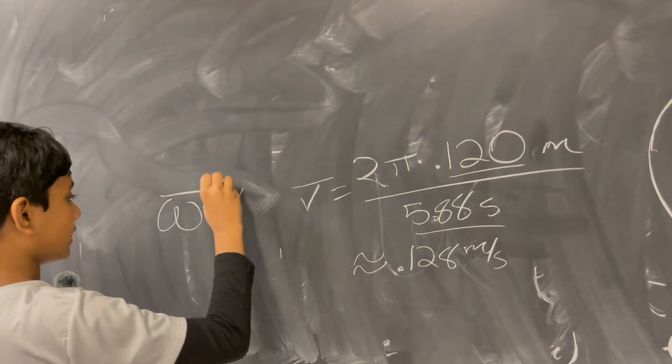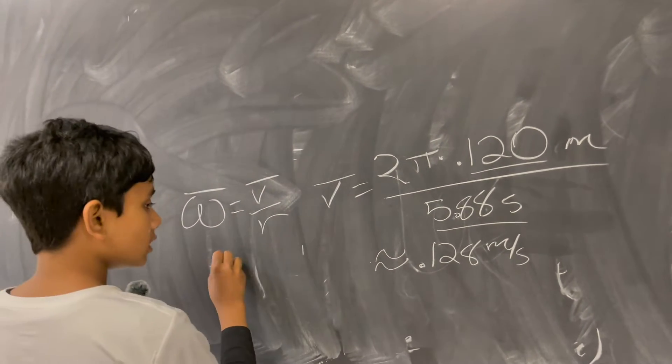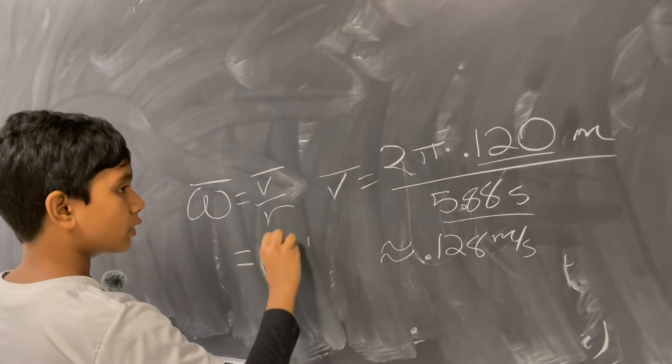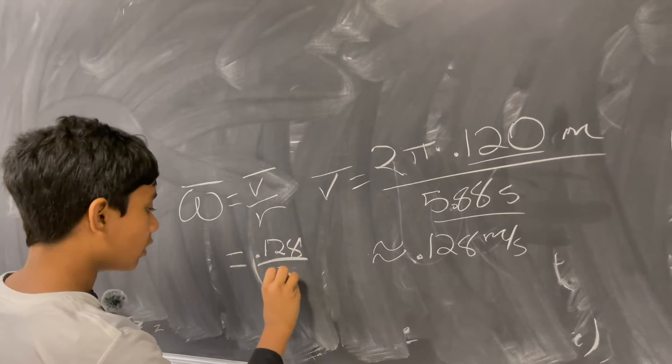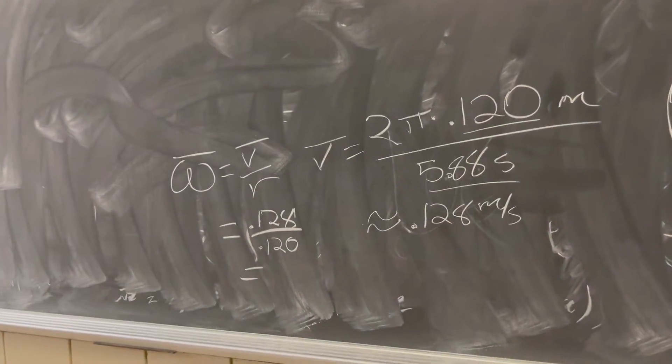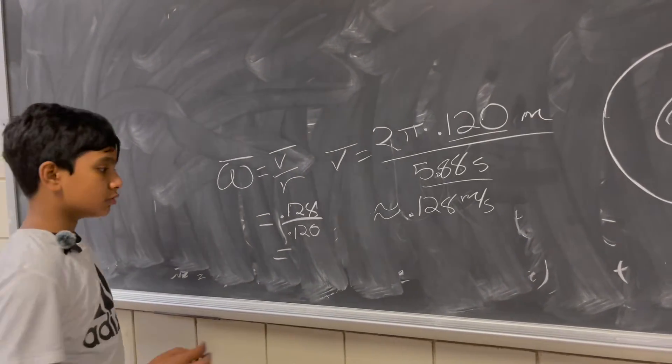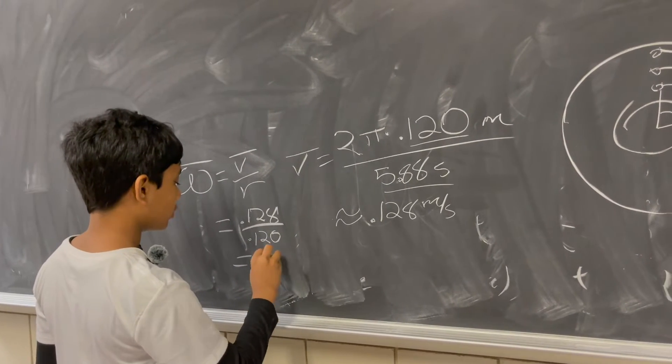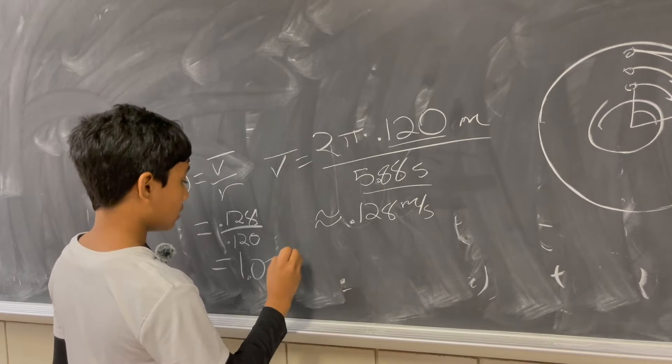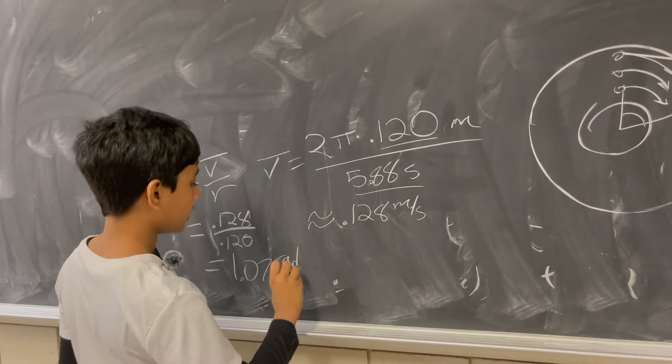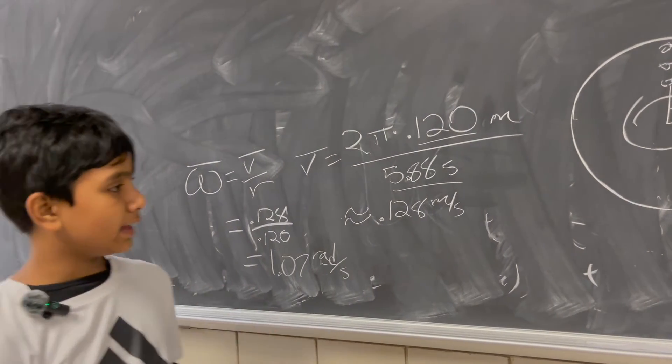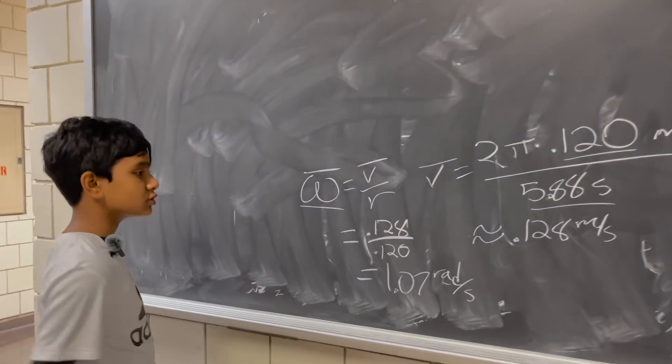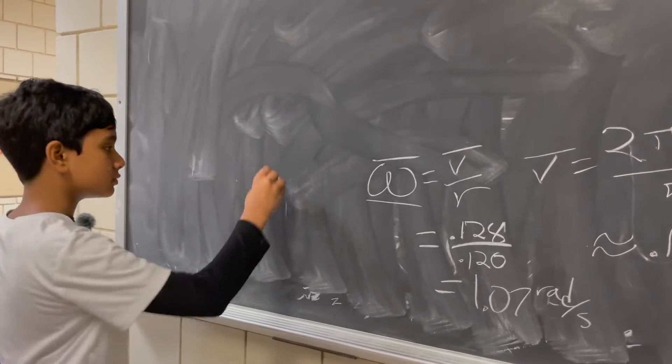Or you can find the average angular velocity, which is just the tangential velocity over r, so that's just going to be equal to 0.128 divided by 0.120, which is about 1.007 radians per second. Now the problem with this thing is that it doesn't quite have a direction, so it's not a vector.